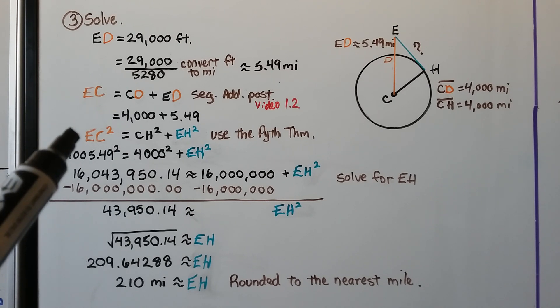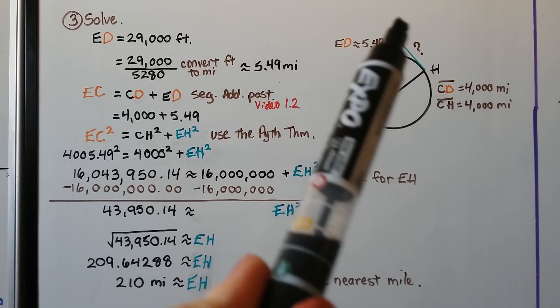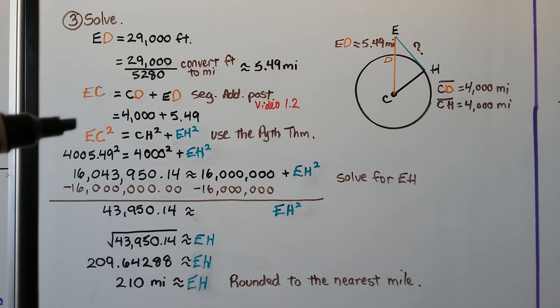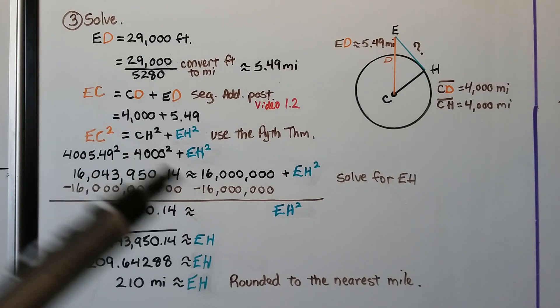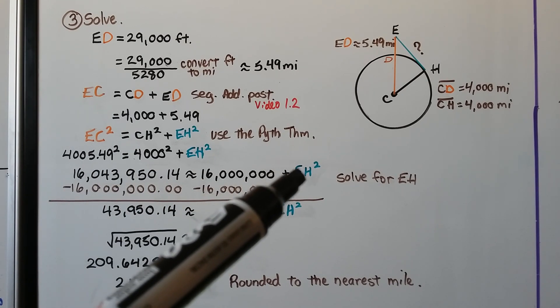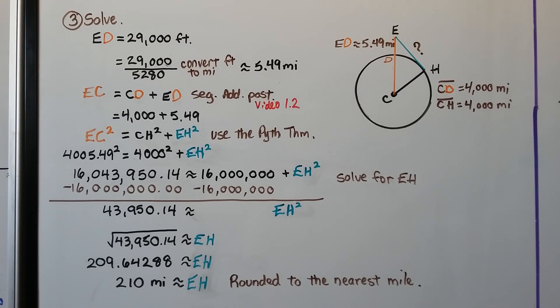Using the Pythagorean theorem, EC squared is equal to CH squared plus EH squared. We know EC is 4,005.49. We square it and get 16,043,950.14. And 4,000 squared is 16,000,000 plus EH squared. Solving for EH, we subtract the 16,000,000 from each side and get 43,950.14 is approximately EH squared. We find the square root of 43,950.14. And we get 209.64288, which rounded to the nearest mile is about 210 miles.